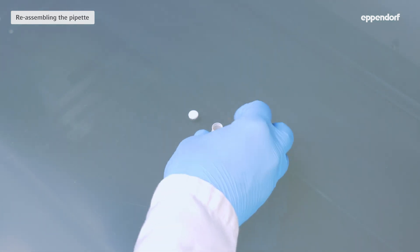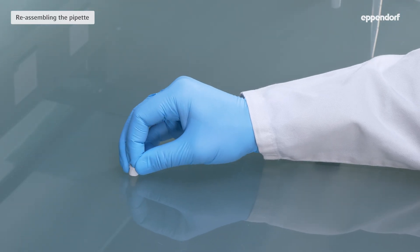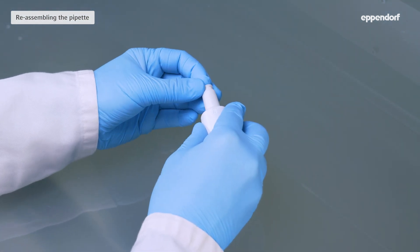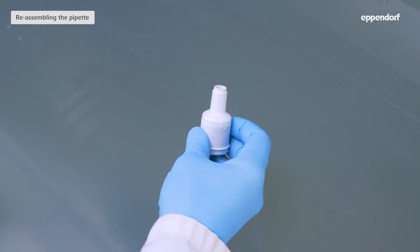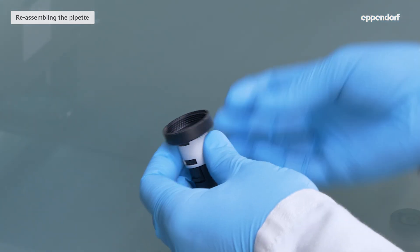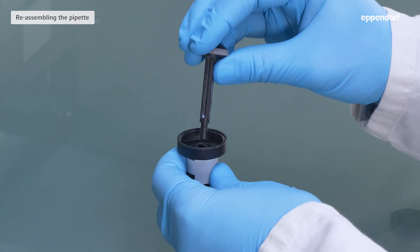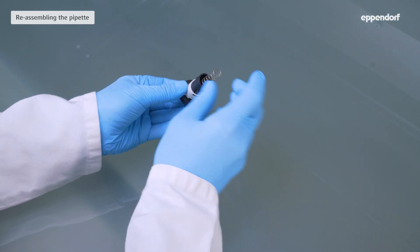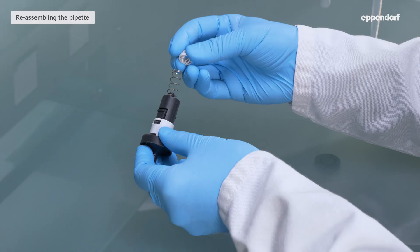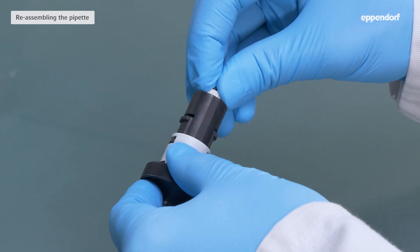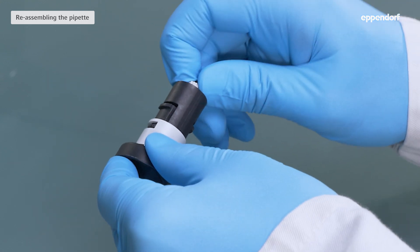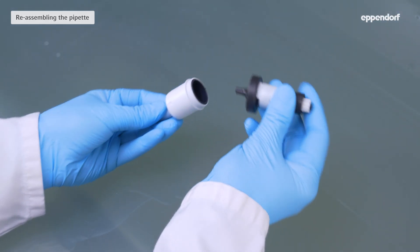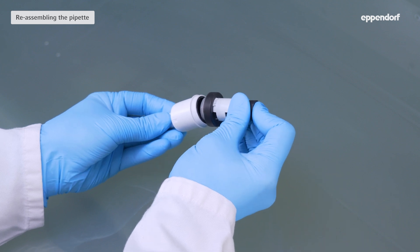To assemble a large volume pipette, insert a new protection filter into the sleeve and push it back into the tip cone after you've cleaned it. Insert the piston and the spring into the piston guide. Attach the piston mount while pressing the spring into the guide. Rotate the piston mount 90 degrees. Insert the assembled lower part into the upper part. Attach the ejector sleeve and screw it on tightly.